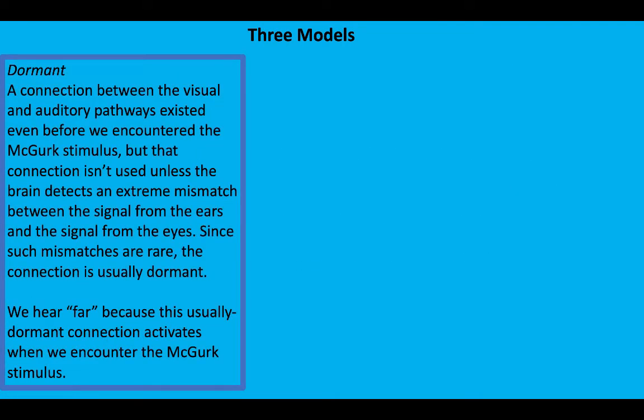What about dormant? The hypothesis that there is a connection already there between your visual and auditory pathways, but your brain pretty much ignores it, except when there are extreme mismatches between stimulus to the eyes and stimulus to the ears.